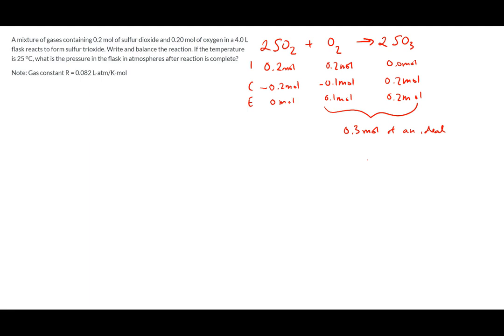It should be 0.3 moles because you have 0.2 moles of SO3, which is the product from the reaction, and then you still have that leftover oxygen, that 0.1 mole. Those get combined together if we consider them all to be ideal gases, and we would use that for the next part. We set up our ideal gas law, PV equals NRT. P is pressure, V is volume, N is the number of moles, R is the gas constant, and T is temperature.